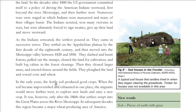In the early years, the soil was fertile and there were good crops. But when the soil lost its fertility — when it was impoverished and exhausted — the migrants would move further west, wanting new land to raise new crops. Only after the 1860s did these settlers sweep into the Great Plains, across the river Mississippi.